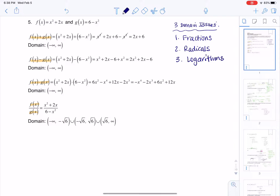Now if I look at my original functions, x squared plus 2x and 6 minus x squared, I don't have any fractions, I don't have any radicals, and I don't have any logarithms. So the domain for these two functions, just f and g separately, their domain is all real numbers.